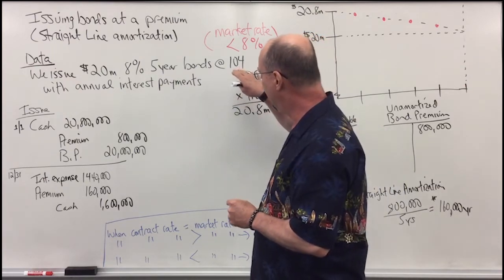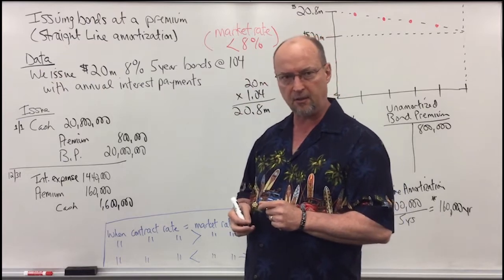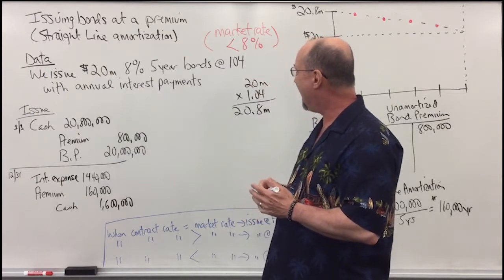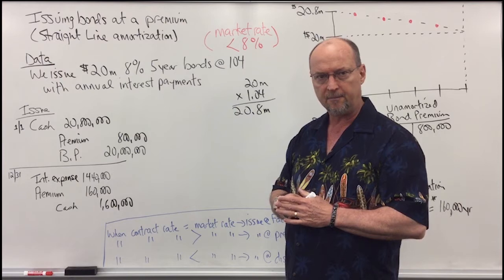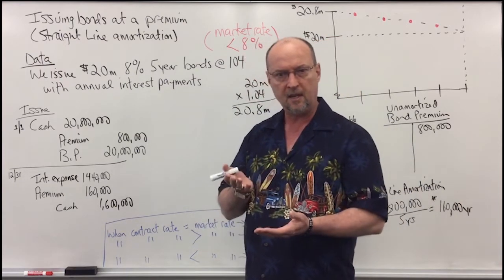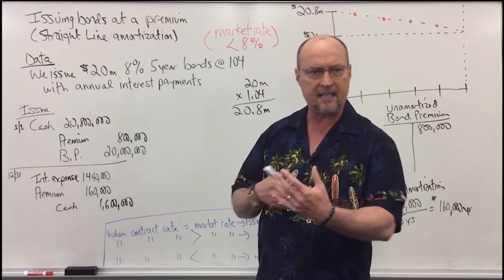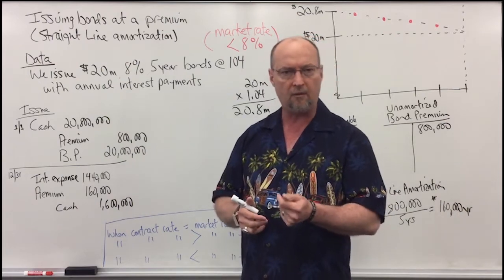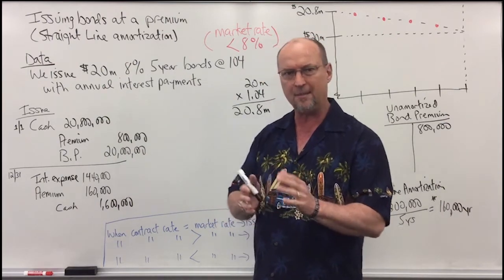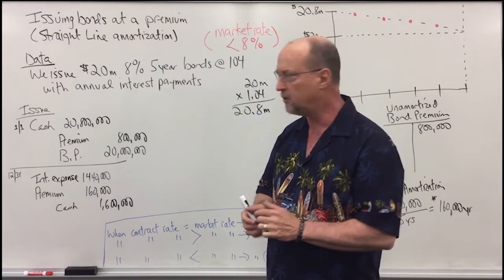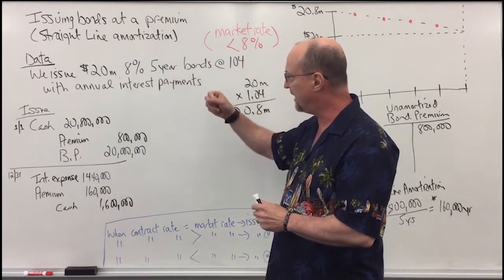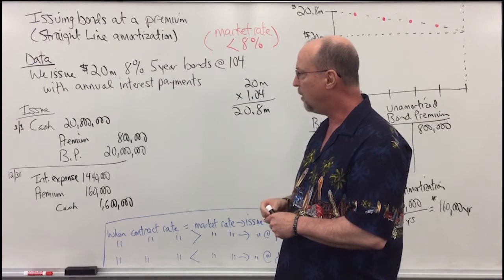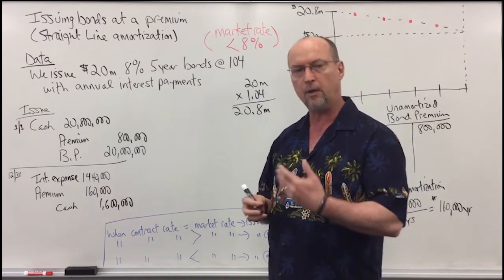When you issue bonds at more than 100% of the face value, what that tells us is that the contract rate of 8% is actually greater than the market rate. Market rates are in constant motion, and there are many economic factors that push interest rates up and down. Because the contract rate — the rate stated on the bonds — was greater than the market rate, we're able to issue the bonds for more than face value. We call that a premium.